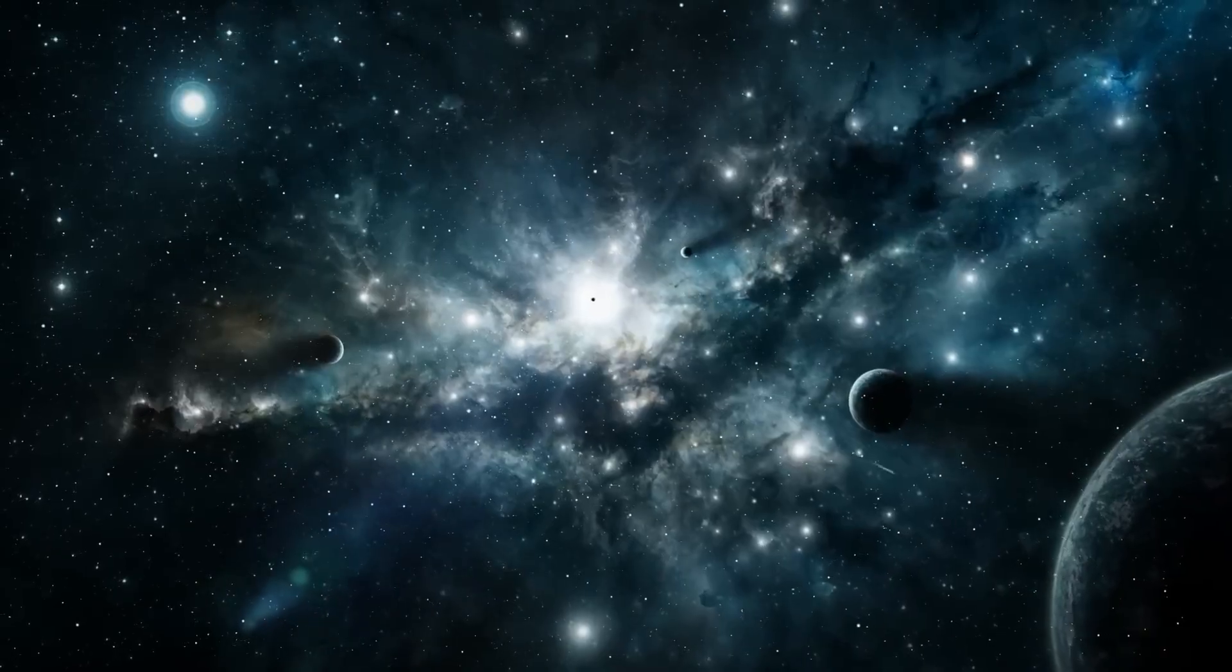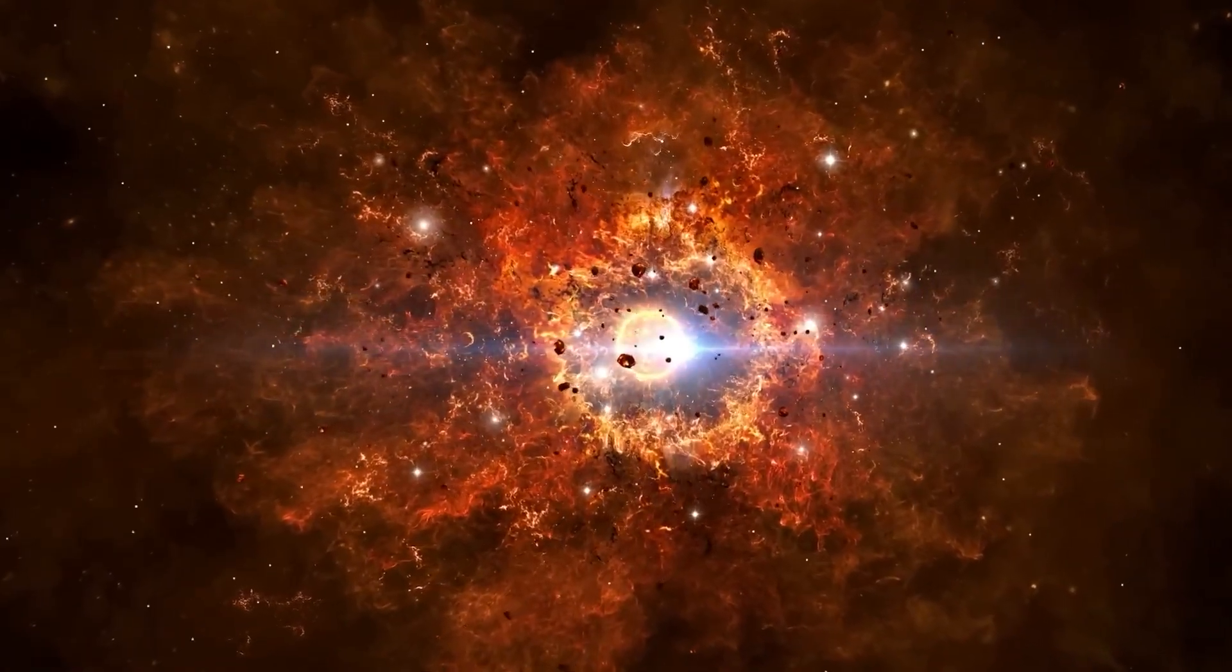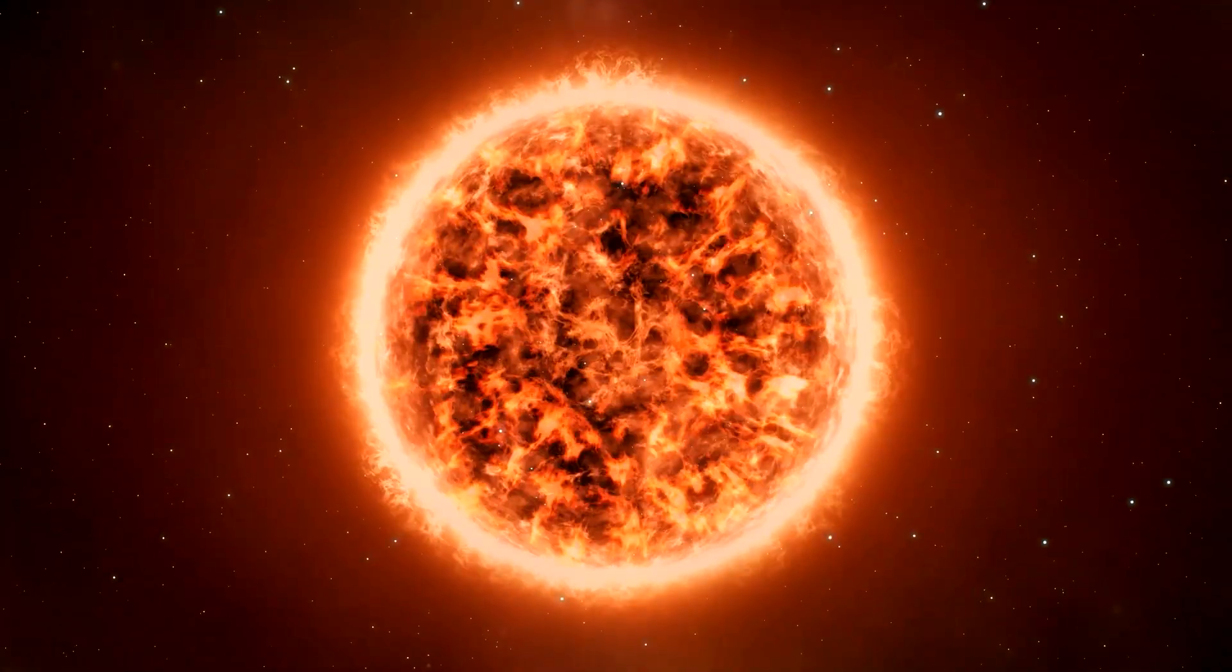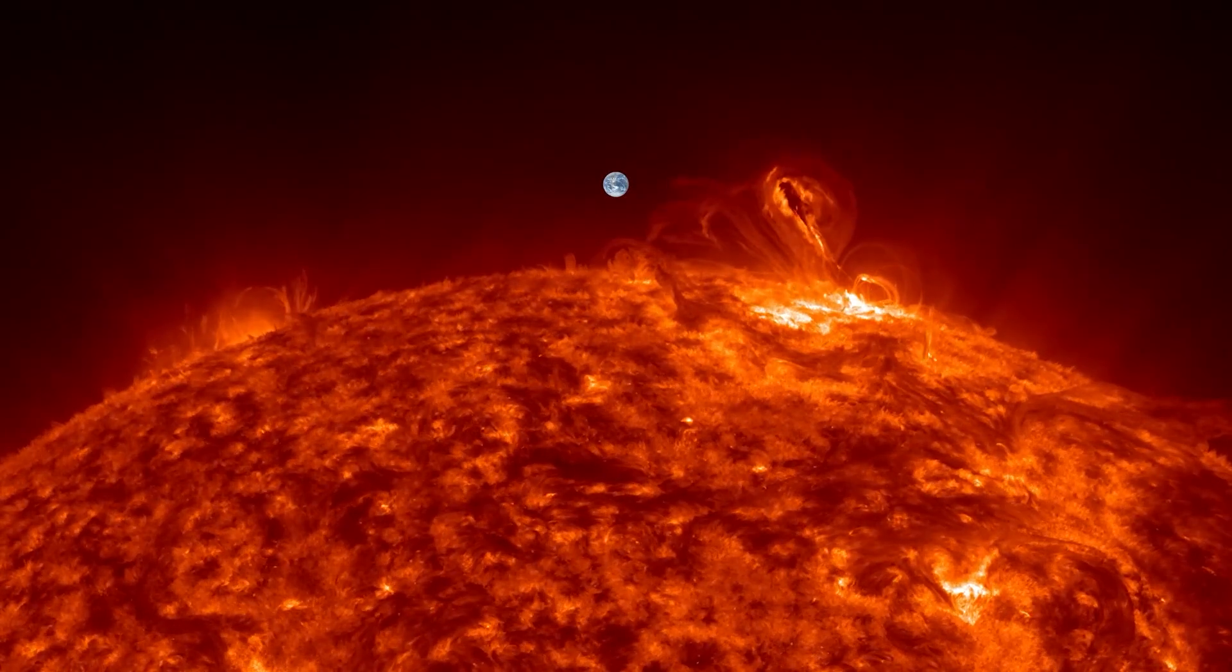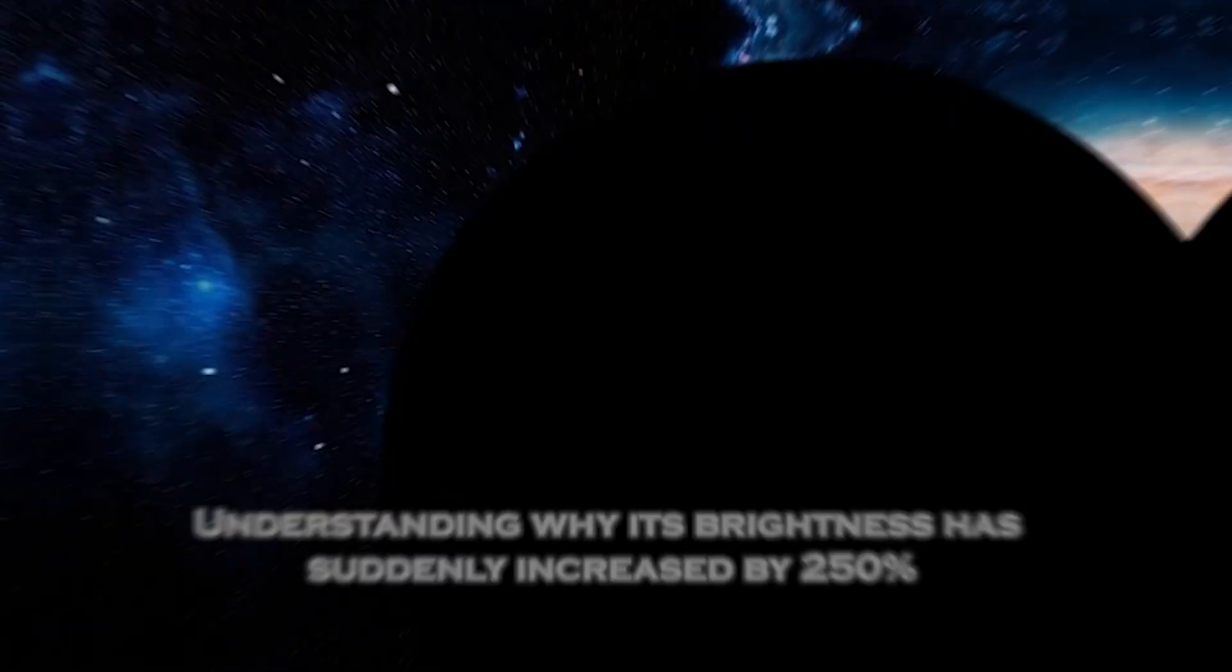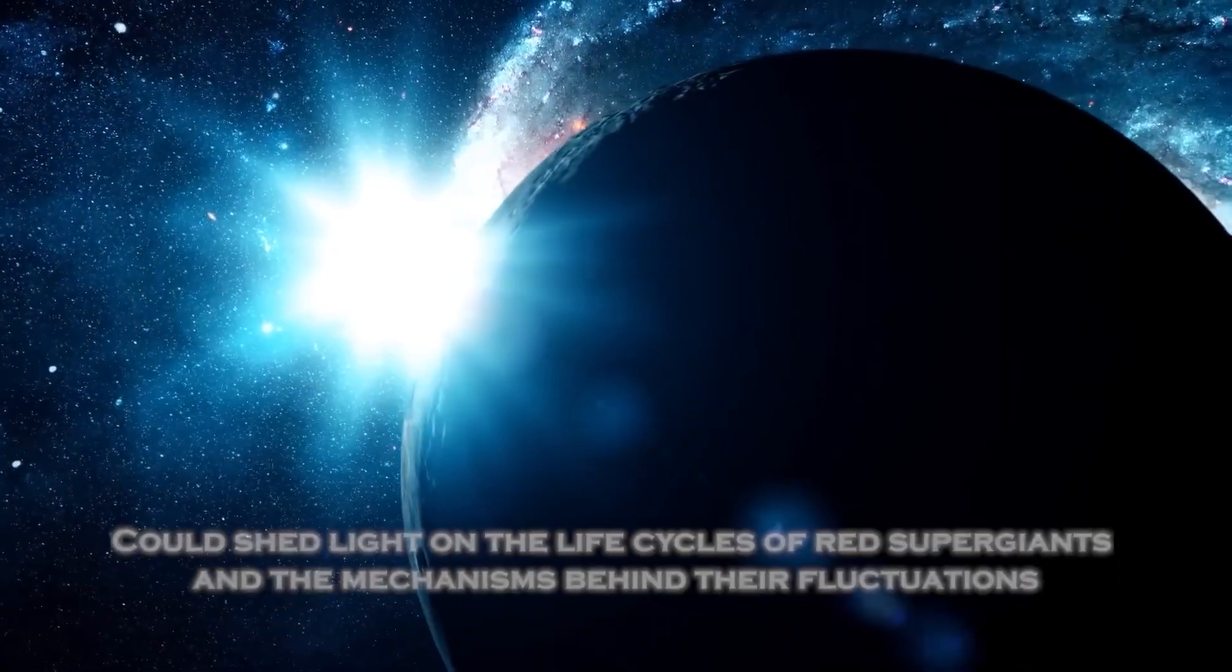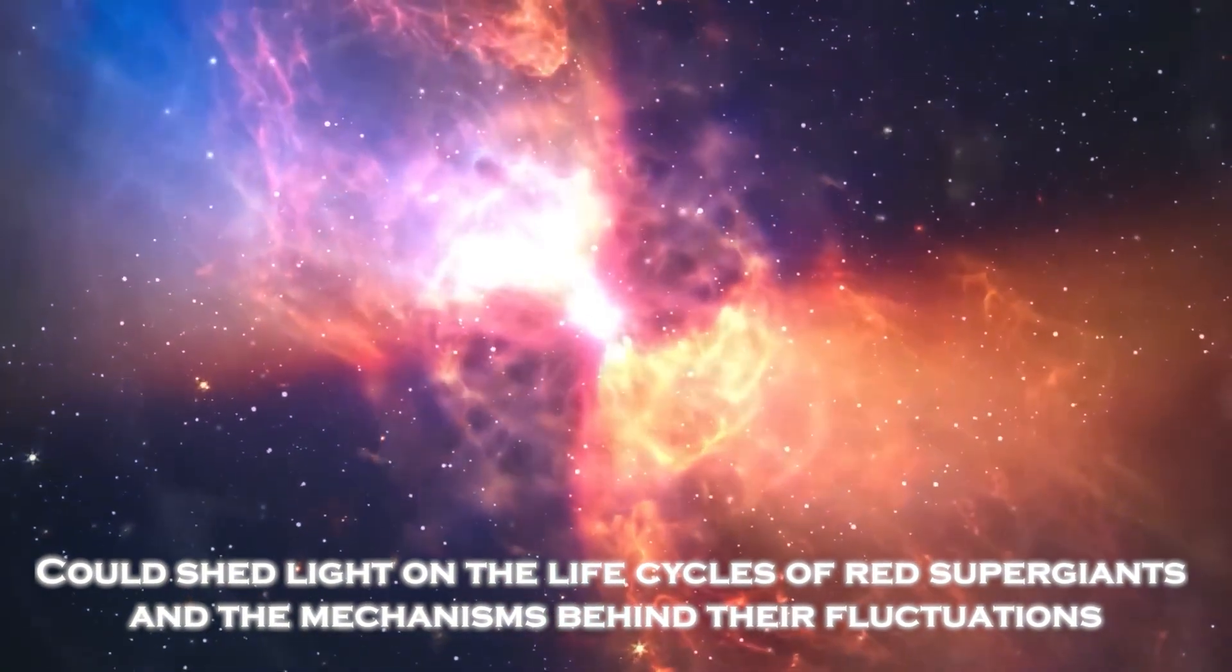Betelgeuse's recent increase in brightness also raises new questions about the inner workings of red supergiants. These stars are notoriously unpredictable due to their immense size and complex internal dynamics, which create turbulent conditions that challenge even the most advanced models. Betelgeuse, in particular, has puzzled astronomers for years with its irregular light patterns. Understanding why its brightness has suddenly increased by 250% could shed light on the life cycles of red supergiants and the mechanisms behind their fluctuations.